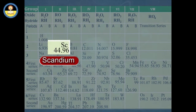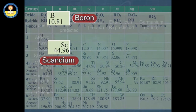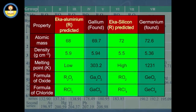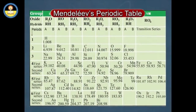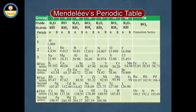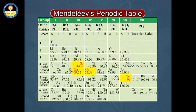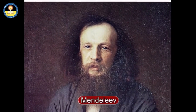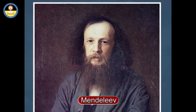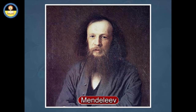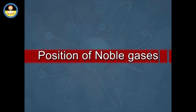Similarly, the properties of scandium were found to be similar to those of boron. These predictions provided convincing evidence for both the correctness and usefulness of Mendeleev's periodic table. Due to the extraordinary success of Mendeleev's predictions, chemists recognized him as the originator of the concept of classification of elements.